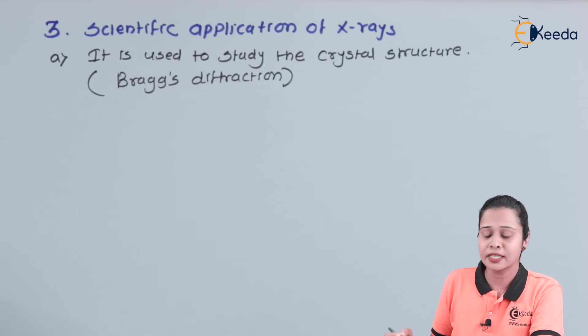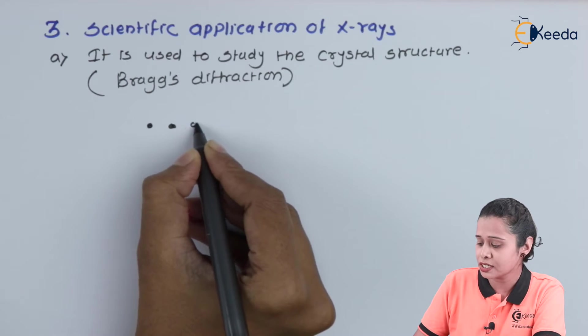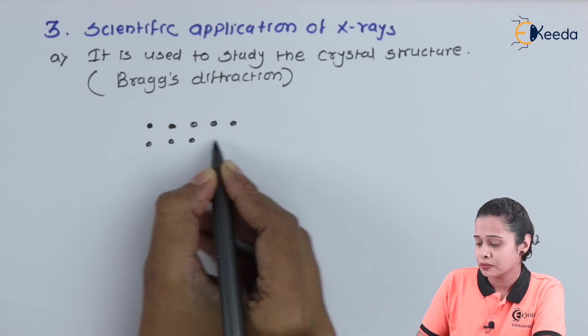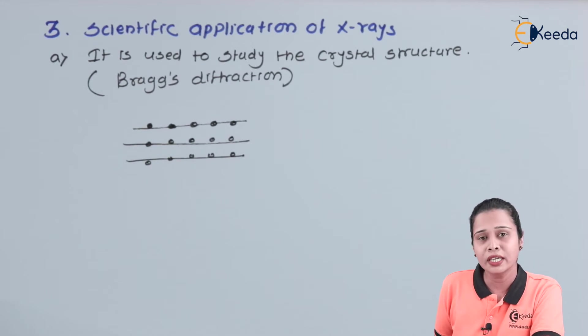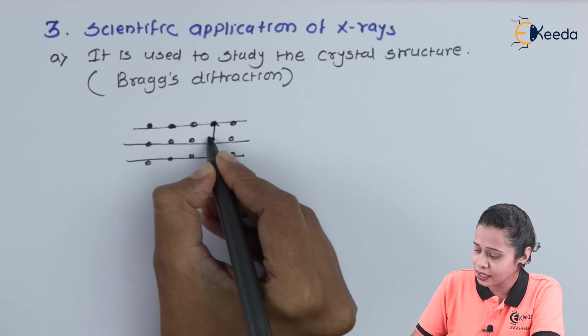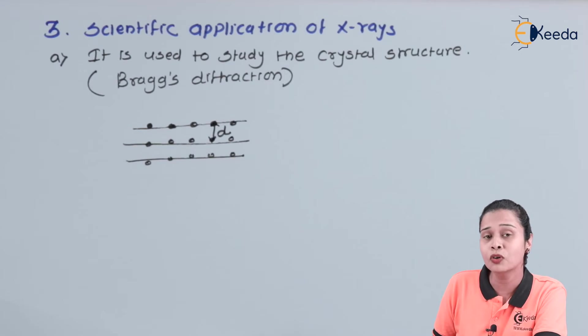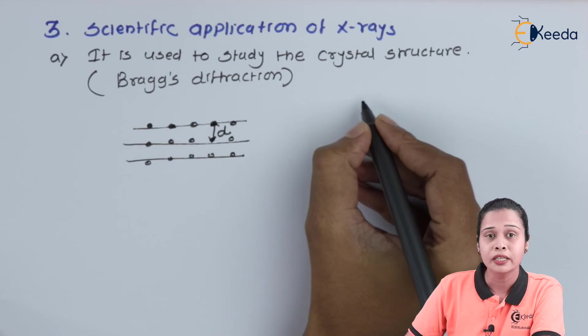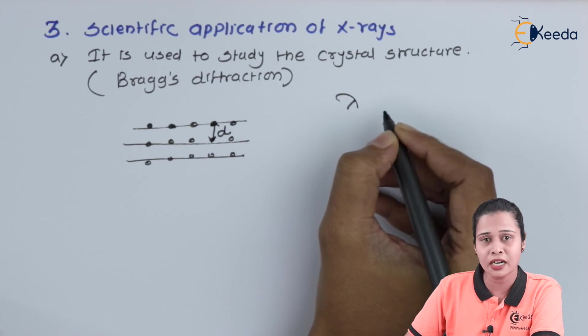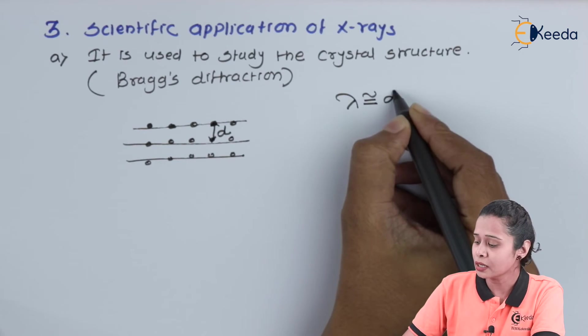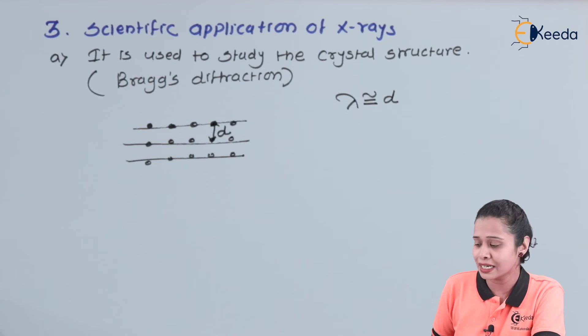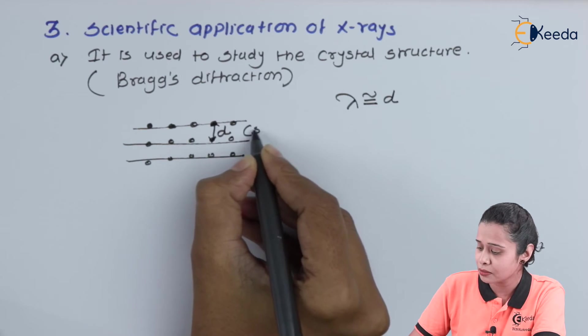Now, let us consider this case. Suppose we have a crystal. In a crystal, we know there is a 3D periodic arrangement of atom, ions or molecule. And let us say this is the interatomic distance D. Now, for diffraction pattern, we want the wavelength of incident light should be less than or approximately equal to the interplanar distance or the distance that is the slit. So here we can say this acts as a slit.